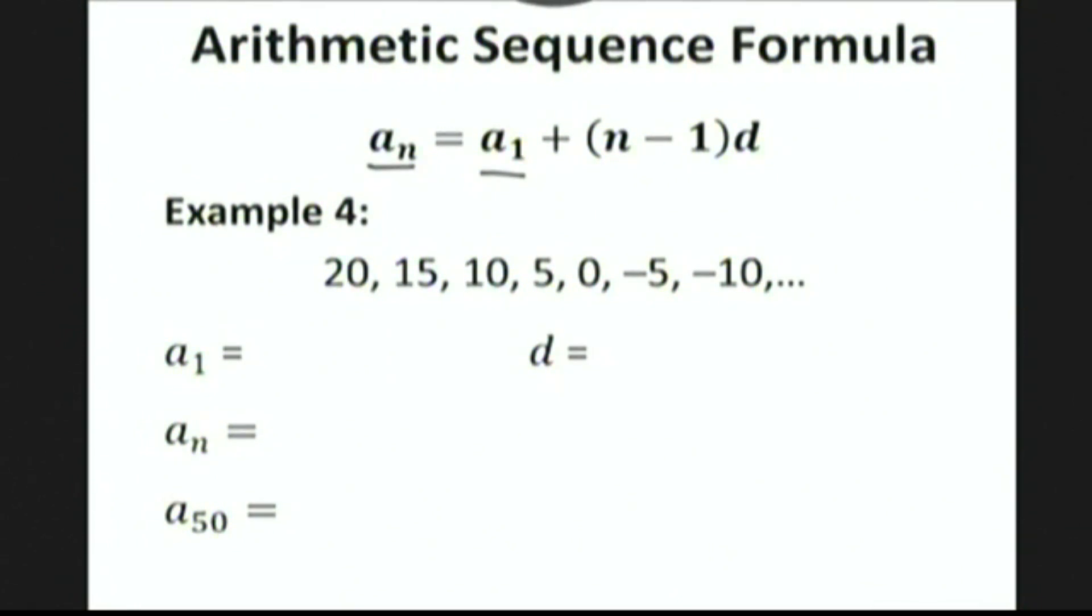Let's look at this example here: 20, 15, 10, 5, 0, -5, -10, and so on. The first term of this sequence is 20. The common difference of this sequence is 15 minus 20, which is negative 5. So using the arithmetic sequence formula, we have a_n = a_1, which is 20, plus (n-1) times the common difference, which is negative 5. Once again, be careful. It's negative 5 this time, not positive 5.